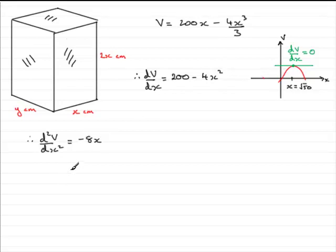And we're testing when x is root 50. Remember, you're not meant to know that this graph exists as such, because I know we can clearly see it's a maximum here, but we've got to nonetheless carry out a test to show that it would be. So what we need to do is just say that when x equals root 50, we end up with d²v by dx² is equaling minus 8 times square root of 50.